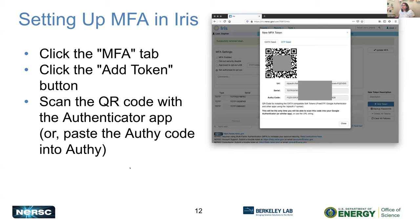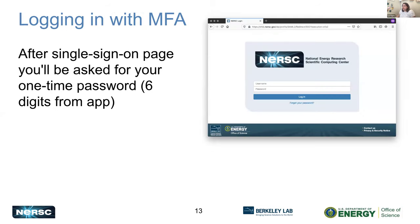When you get into IRIS and you're setting up your MFA, go to the MFA tab at the top and click the Add Token button. There will be a QR code that you'll scan with your authenticator app. If you have your phone, you just use your phone camera, or in Authy you paste a code — that will connect your NERSC account to your personal authenticator app. You will then be asked to use that one-time password anytime you're logging into NERSC. It'll be six digits.